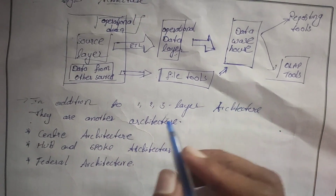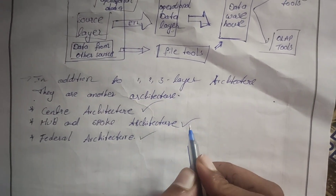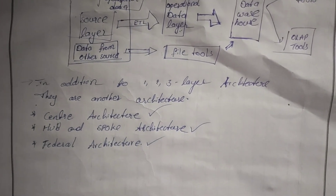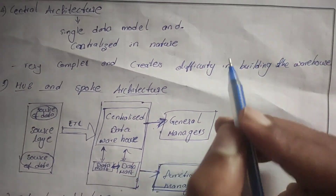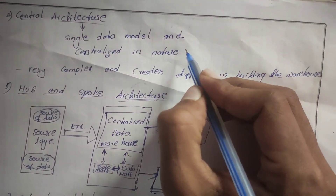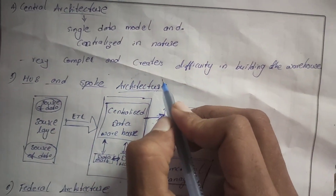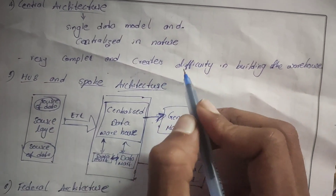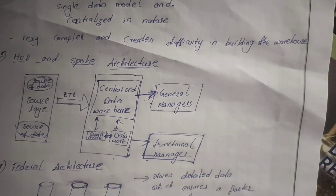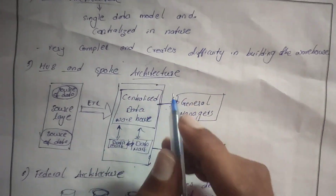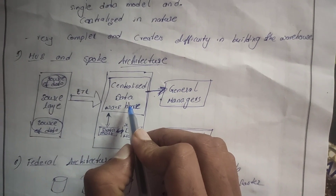In addition to the first, second, and third architectures, there are other architectures: centralized architecture, hub and spoke architecture, and federal architecture. First, centralized architecture — it is a single data model and is centralized in nature. It is very complex and creates difficulty in building a data warehouse, so in general we cannot use this centralized architecture.